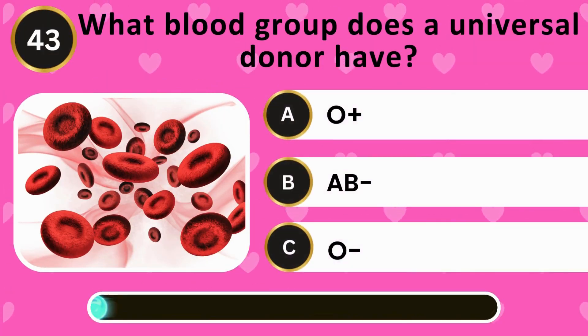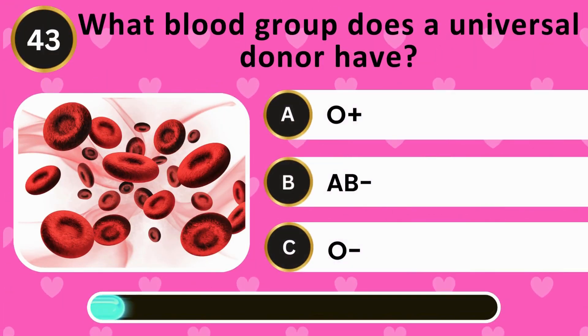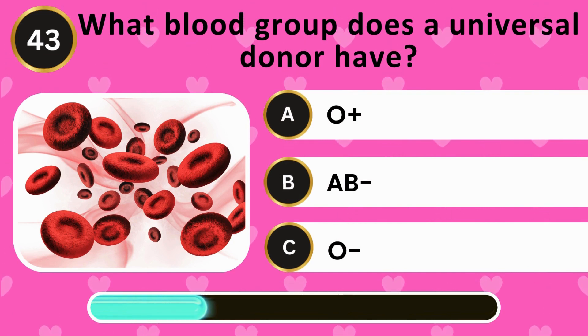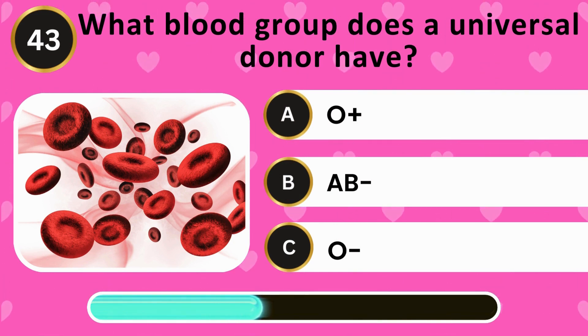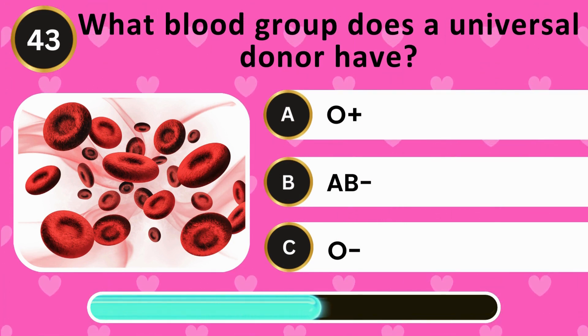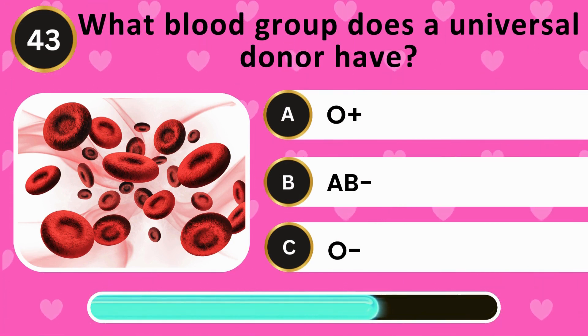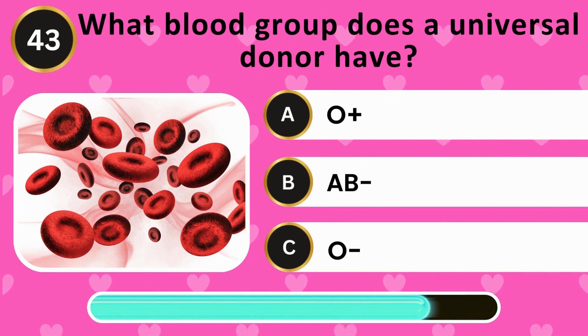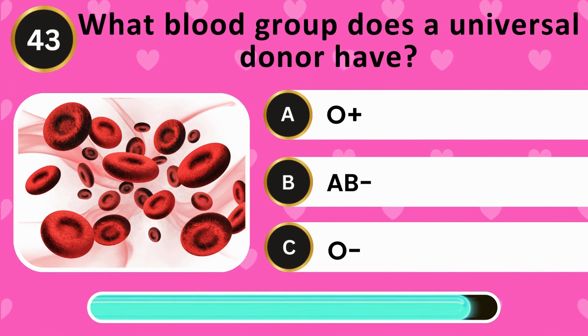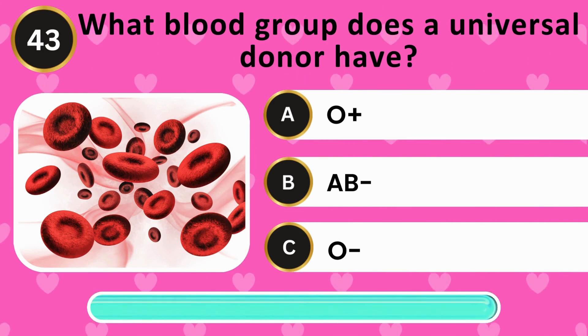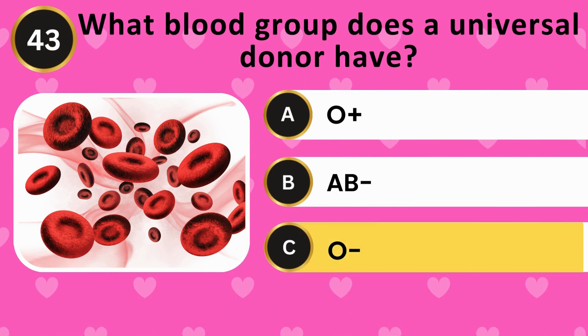What blood group does a universal donor have? O positive, AB negative, O negative. The answer is O negative.